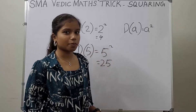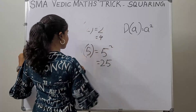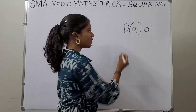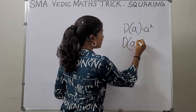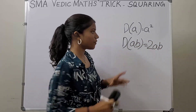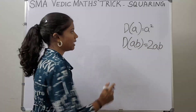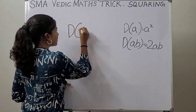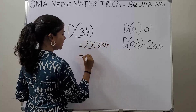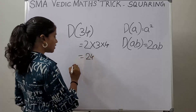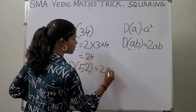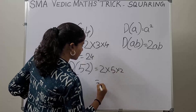Now let's see how to find the duplex of a two-digit number. Duplex of a two-digit number ab is 2·a·b. So the formula is 2ab. Let's take an example: duplex of 34 is 2×3×4 which is 24, and duplex of 52 is 2×5×2 which is 20.